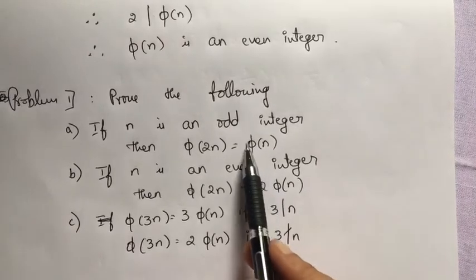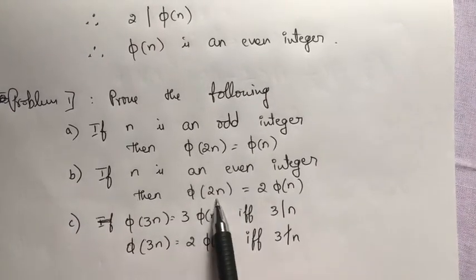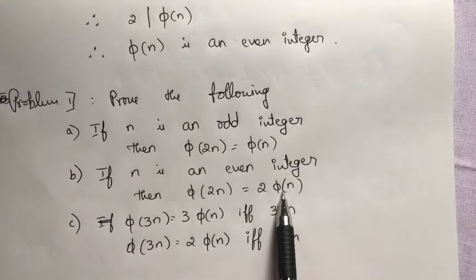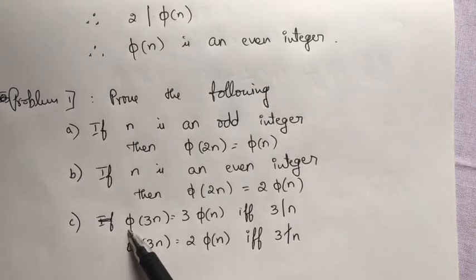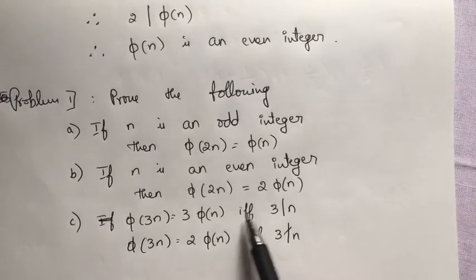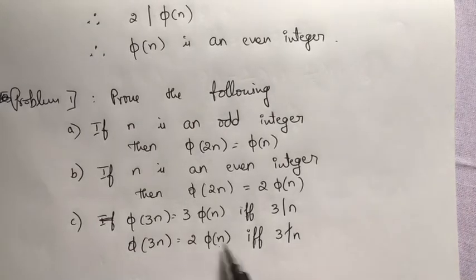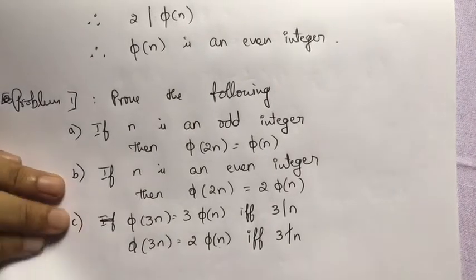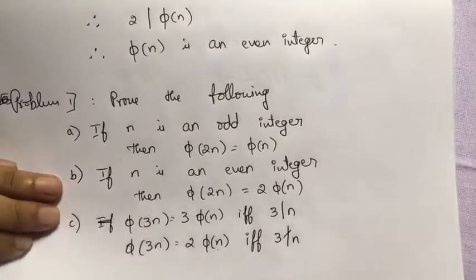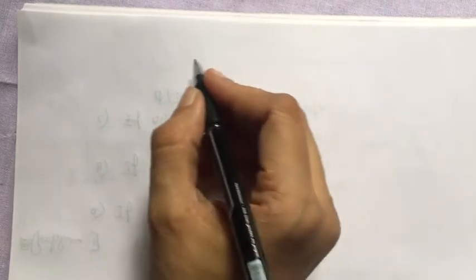Let me take one problem. Prove: phi(2n) = phi(n) if n is odd. Also phi(2n) = 2 × phi(n) if n is even. And phi(3n) = 3 × phi(n) if and only if 3 divides n; phi(3n) = 2 × phi(n) if and only if 3 does not divide n.